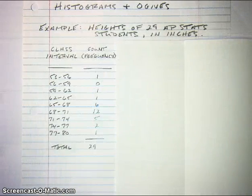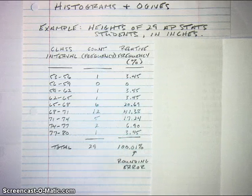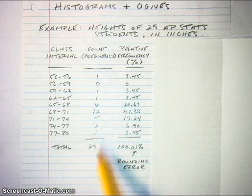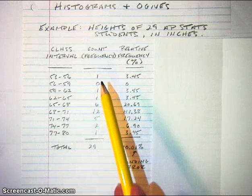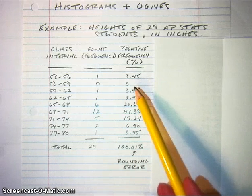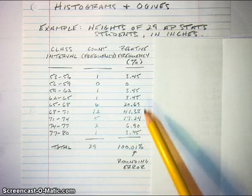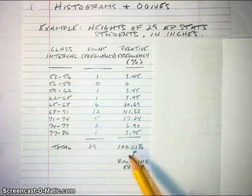What we're going to look at today are a couple more ways to illustrate these data. One is by making a relative frequency histogram. What we do here is take each of the counts and divide by 29, converting to a percent. So 1 out of 29 represents 3.45%, and 12 out of 29 represents 41.38%. These percentages should add up to 100, and they roughly do — there's a little rounding error, but that's typical.